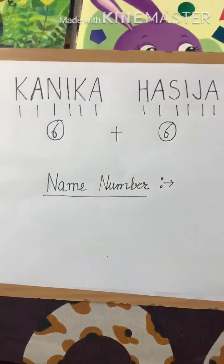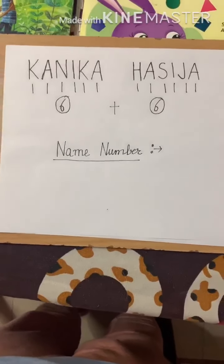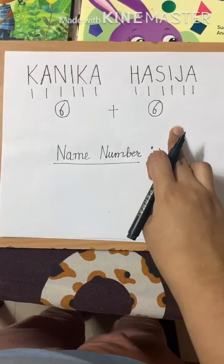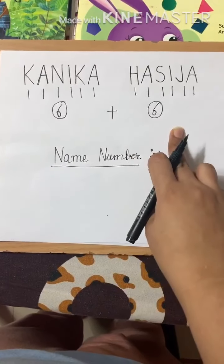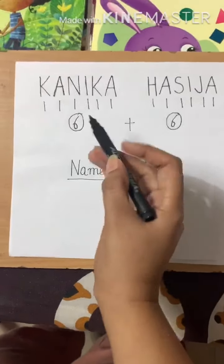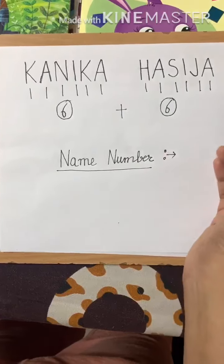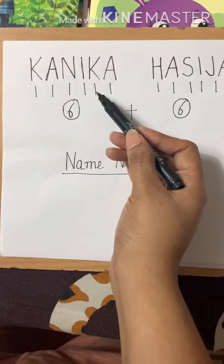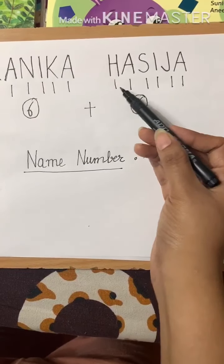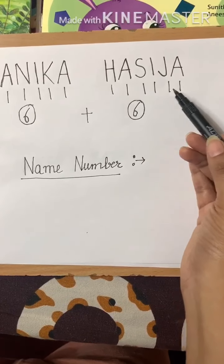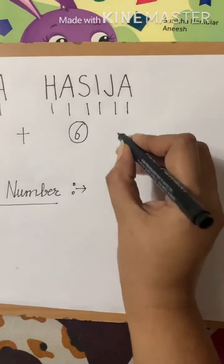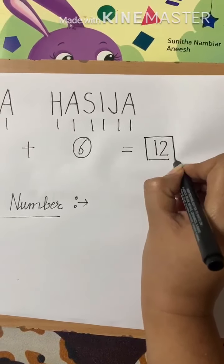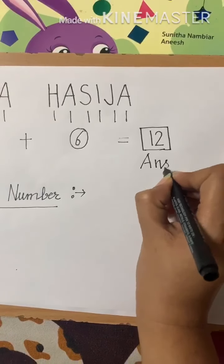So here I am going to add them, as we need to do addition. How will I add 6 and 6? One method is to count all these vertical lines together. Let's do that: 1, 2, 3, 4, 5, 6, 7, 8, 9, 10, 11, 12. I have got 12 as my name number. That is my answer.